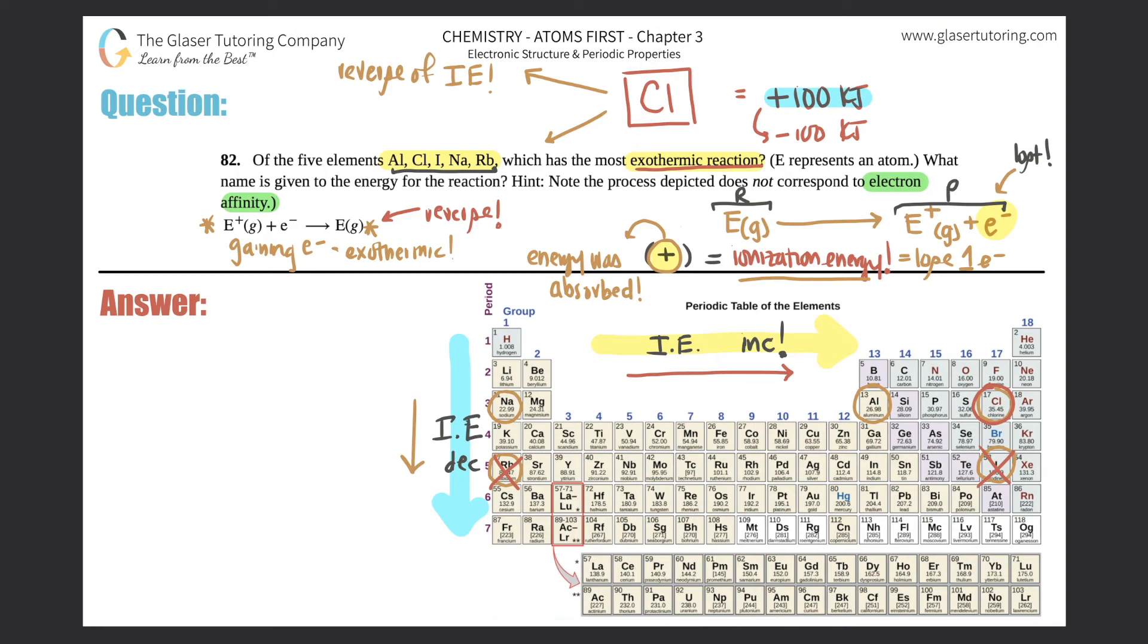The better response for this is called a reduction reaction. This one we haven't gotten into because this is only chapter three. But a reduction reaction is always when you gain an electron. The flip side would be oxidation, which is the loss of an electron. But either of these, I would say, is the name that's given to the energy for this reaction.